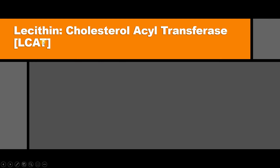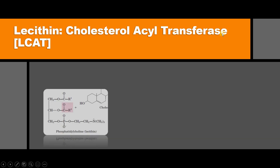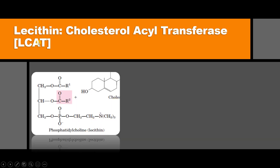The full form of LCAT is lecithin cholesterol acyl transferase. LCAT acts on lecithin. Lecithin has a glycerol backbone with a fatty acid on the first carbon and another fatty acid on the second carbon atom of glycerol. The third carbon atom of the glycerol backbone is esterified with phosphoric acid and choline — so lecithin is phosphatidylcholine, a phospholipid. The action of LCAT is to remove the fatty acid attached to the second carbon atom of the glycerol backbone and hand it over to cholesterol.